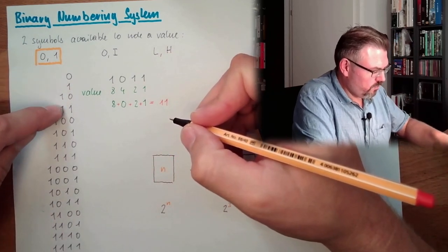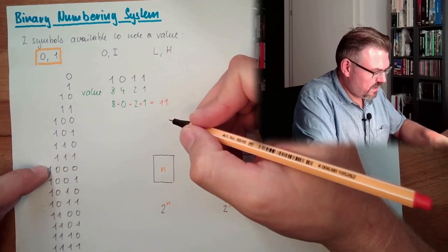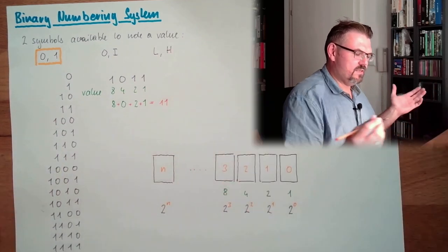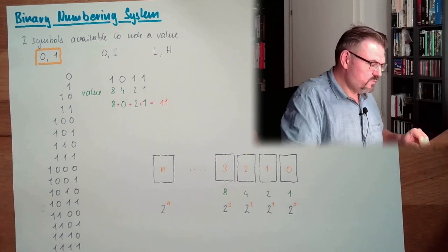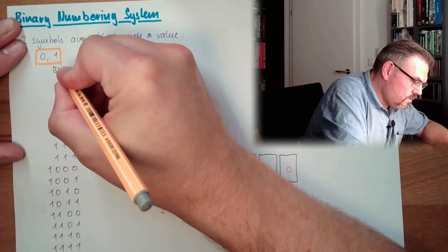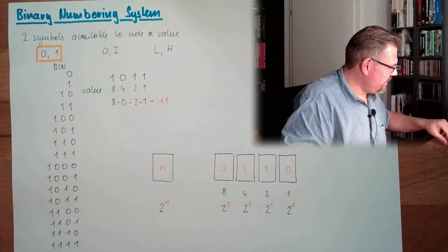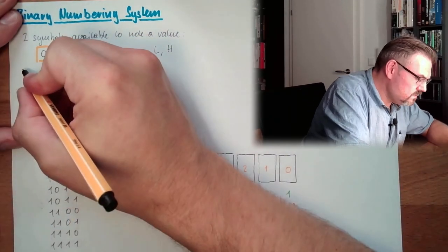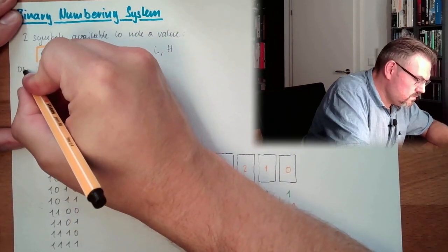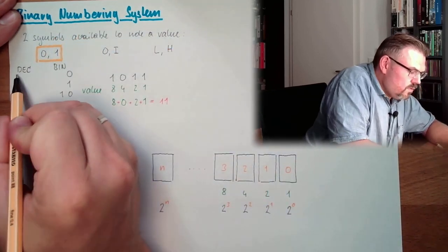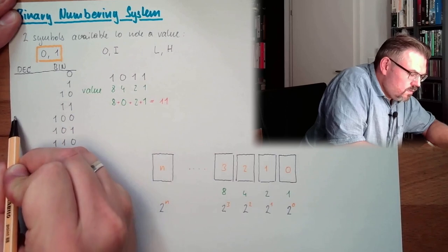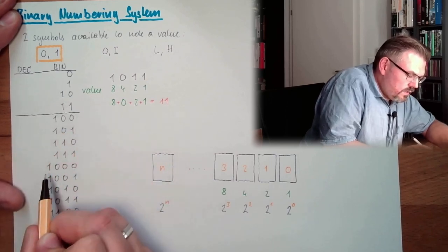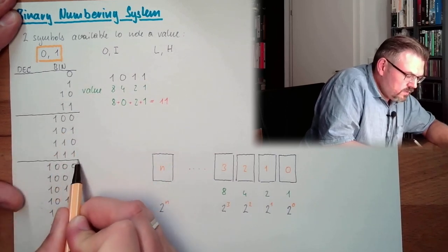Let's count: 0, 1, 2, 3, 4, 5, 6, 7, 8, 9, 10, 11. Exactly 11. Because this would be binary here, and in decimal—